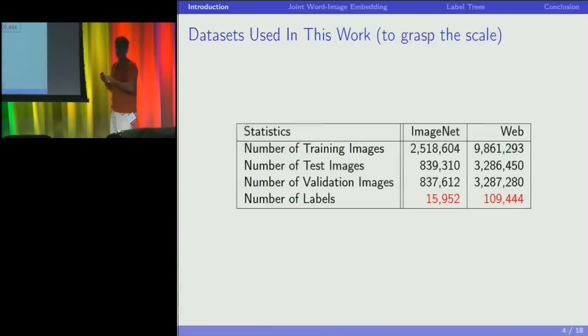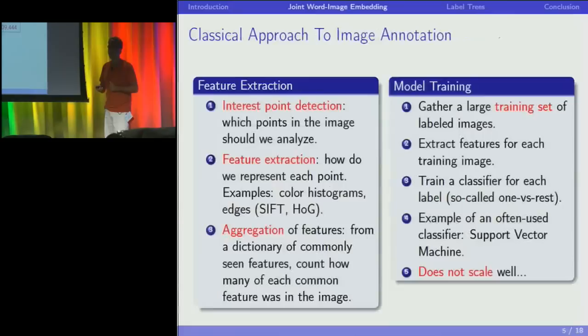That means I have about 100,000 labels — a tiny fraction of what we have access to, but still an order of magnitude bigger than the rest. And you'll see that it's already very difficult.